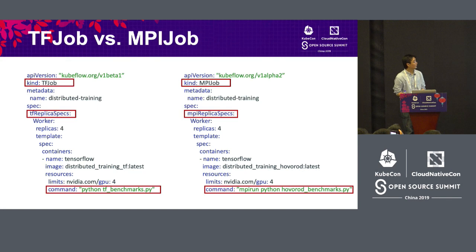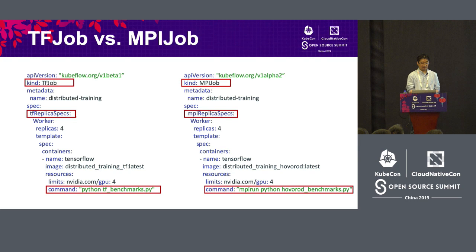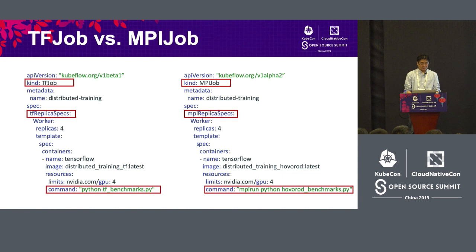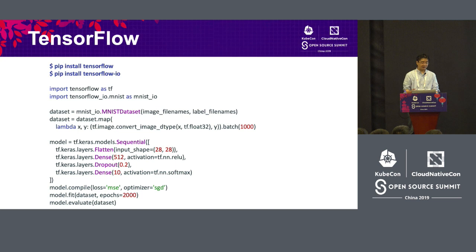TF operator and MPI operator are pretty much very similar. The difference is that you have a different kind of job — TF job versus MPI job — and the spec is either TF replica spec or MPI replica spec. The command line is slightly different, but other than that, they are largely the same. The container images are the same.